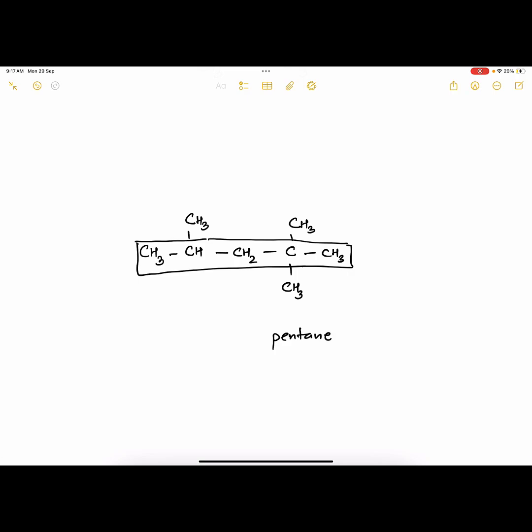Now find the position of the substituents. If you count from left to right, the positions will be 2, 4, and 4 for the methyl groups.